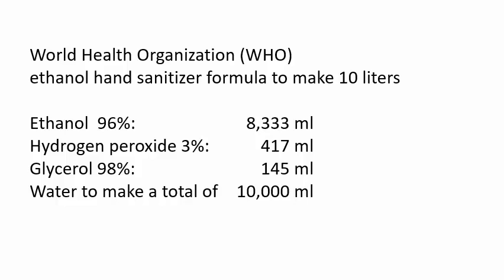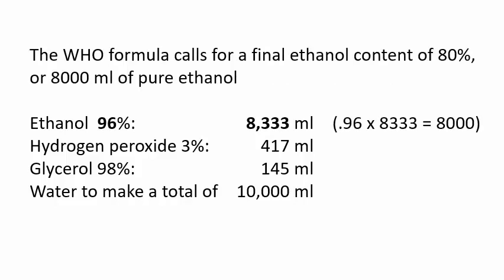This is the WHO formula to make 10 liters of hand sanitizer using 96% ethanol as the main ingredient. The formula calls for a final ethanol content of 80%, or 8,000 milliliters of pure ethanol.